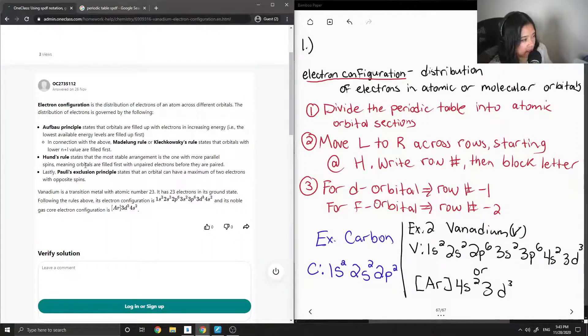Hund's rule states that the most stable arrangement is the one with more parallel spins, meaning orbitals are filled first with unpaired electrons before they are paired. Lastly, Pauli exclusion's principle rule states that an orbital can have a max of 2 electrons with opposite spins.